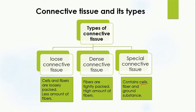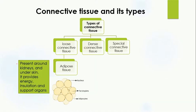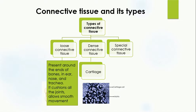An example of loose connective tissue is adipose tissue. Adipose tissue is made up of adipocytes, which are fat cells, and the fat droplets are stored inside these cells. Adipose tissue is present around the kidney and under the skin, and it provides energy, insulation, and support to the organs.